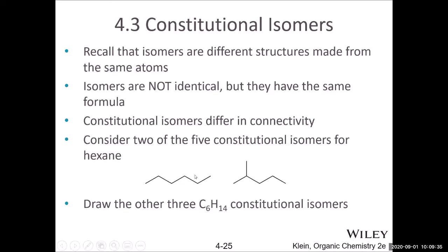For hexane, by moving the atoms around and building isomers, there are five constitutional isomers for the hexanes. For all the structures, you can easily find them online — there are many articles and pictures showing all five constitutional isomers.